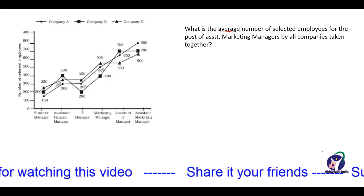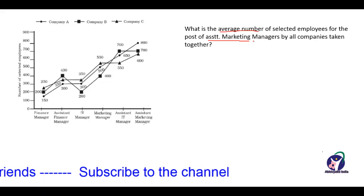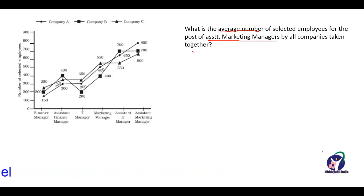The next question is: what is the average number of selected employees for the post of assistant marketing manager by all companies taken together? Company A has 800, company B has 700, and company C has 600 selected employees. The total is 8+7+6 = 21, so 2100 total. Divided by 3, the average is 700. So the average for all three companies A, B, and C is 700 employees.